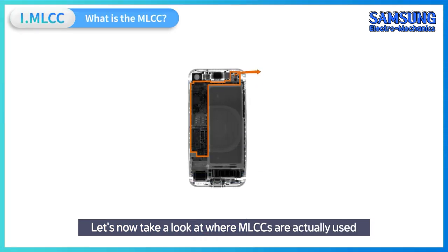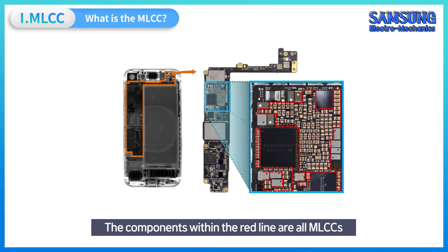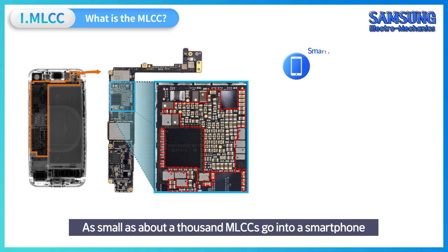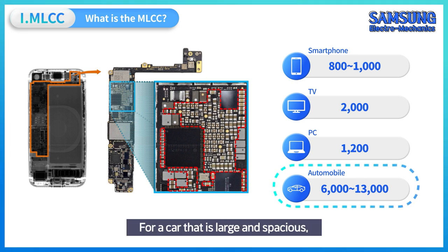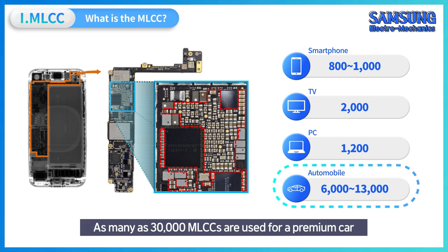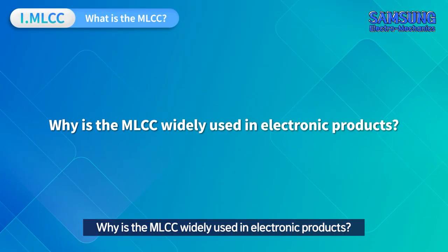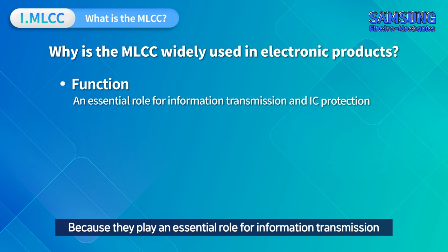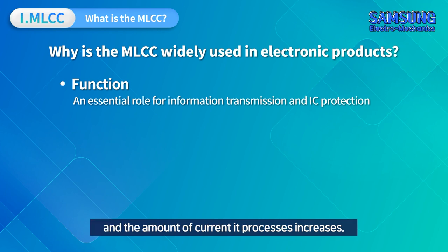MLCCs are widely used in electronics. A disassembled cell phone shows that the components within the red line are all MLCCs — about a thousand MLCCs go into a smartphone. For a car, more than 10,000 MLCCs are used, and as many as 30,000 are used in a premium car. MLCCs play an essential role in information transmission and IC protection, so as circuits get faster and process more current, the number of MLCCs increases proportionately.